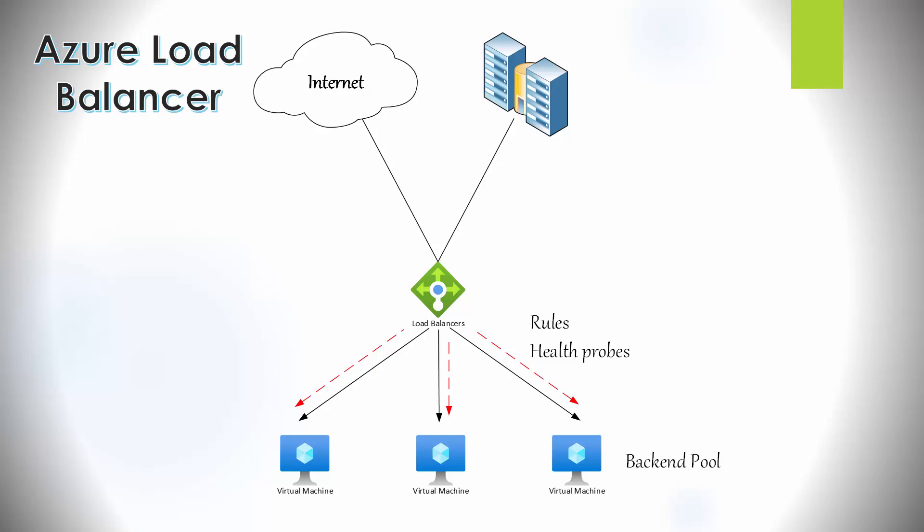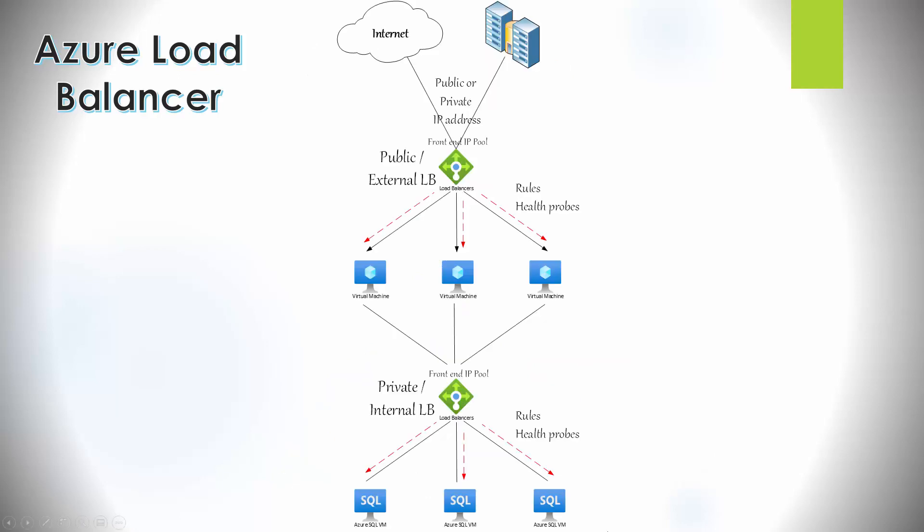The load balancer also has health probes to ensure services are up and running and responding. If one virtual machine goes down, it knows not to send traffic to it, and then checks when it is back up and running to distribute traffic to it again. It knows when virtual machines go down so it can stop sending traffic to the failed one and monitor it for when it comes back up — this is all part of the health probe process.